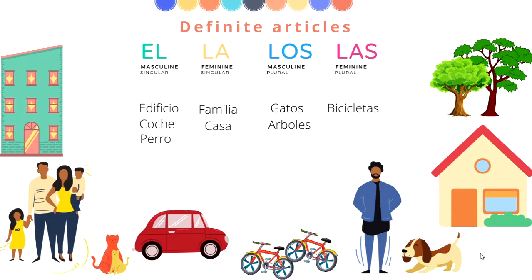So you can see on your screen different things: trees, a house, a dog, bicycles, cats, family, a building. I want you to take a second — if you like, you can pause the video. Write down the nouns that you see, whether feminine or plural, or masculine and singular, from what you understand so far. I'm going to give you a few seconds and then I'm going to help you make sentences.